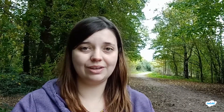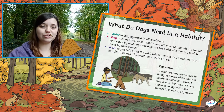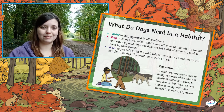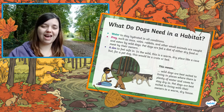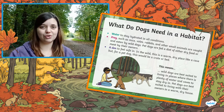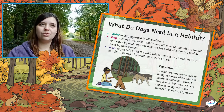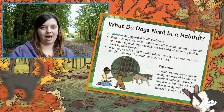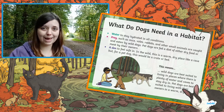The PowerPoint includes some great habitat examples for animals that you might have easy access to. For example, you could use the 'what do dogs need in a habitat' slide as an example, and then ask your children or group of children to talk about what kind of habitats other pets they have, like rabbits or cats, might need to be happy.